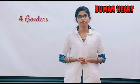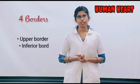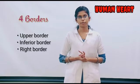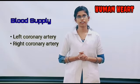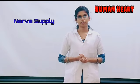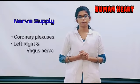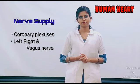It has four borders: upper border, inferior border, right border, and left border. Blood supply is from the left and right coronary arteries. Nerve supply is from the coronary plexus and the left, right, and vagus nerves.